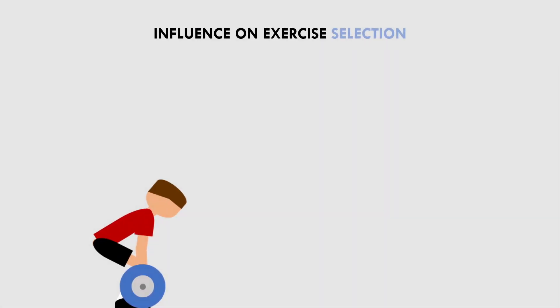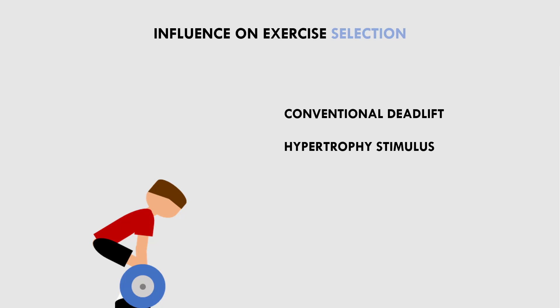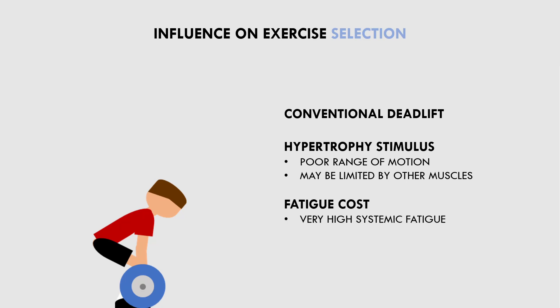To better understand the concept, let's use the conventional deadlift as an example. The conventional deadlift is a compound lift that allows trainees to lift very heavy loads relative to the strength of the lifter. In terms of hypertrophic stimulus, it mainly aims to target the glutes and hamstrings, but it doesn't take these muscles through a very large range of motion and may even be limited by other accessory muscles before the target muscle. In terms of fatigue, it induces very high systemic fatigue because almost all muscles in the body are working to stabilize and very heavy loads are lifted. It also generally taxes the lower back quite significantly. Therefore the overall stimulus to fatigue ratio for this exercise is probably quite poor.